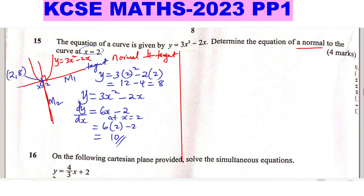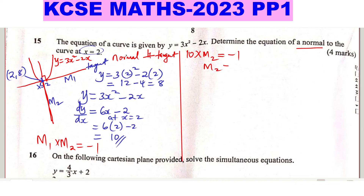Having found M1, we can now get the gradient of the normal. Since the normal is perpendicular to the tangent, and if two lines are perpendicular the product of their gradients equals negative 1, M2 equals negative 1 over M1. So M2 equals negative 1 over 10.